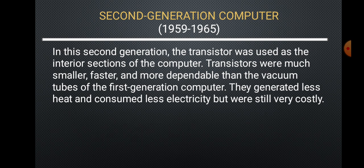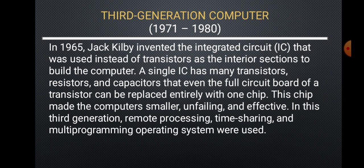Second-generation computers (1959–1965): In this generation, transistors were used as the interior components of computers. Transistors were much smaller, faster, and more dependable than the vacuum tubes of first-generation computers. They generated less heat and consumed less electricity, but were still very costly.